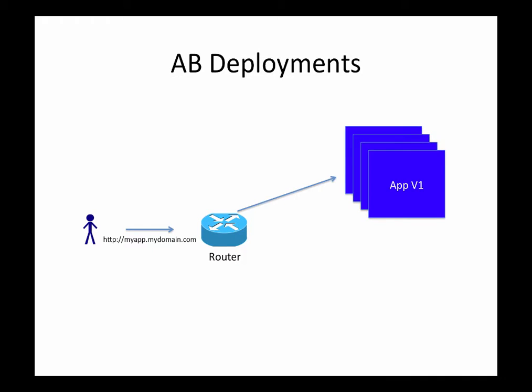Let's look at how it works. Say you have your application and version one is running. The end user is accessing this application using a URL assigned to the application, and there is a router front-ending it. When there are multiple instances of your application running and the user hits that URL, the router takes care of directing the traffic to one of those instances running version one.